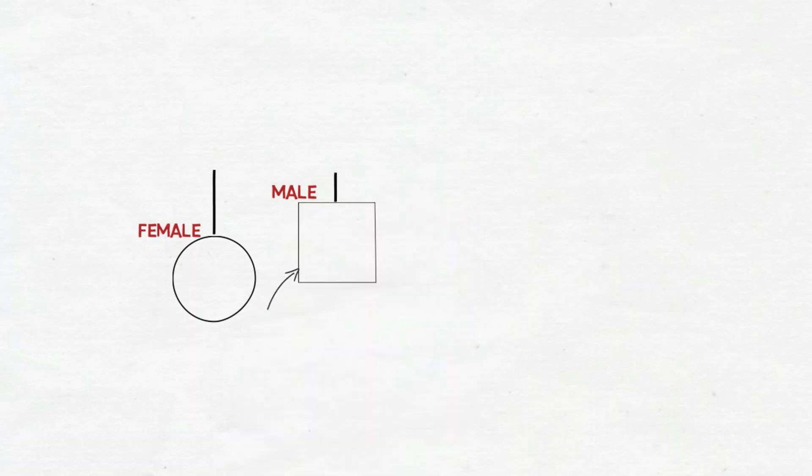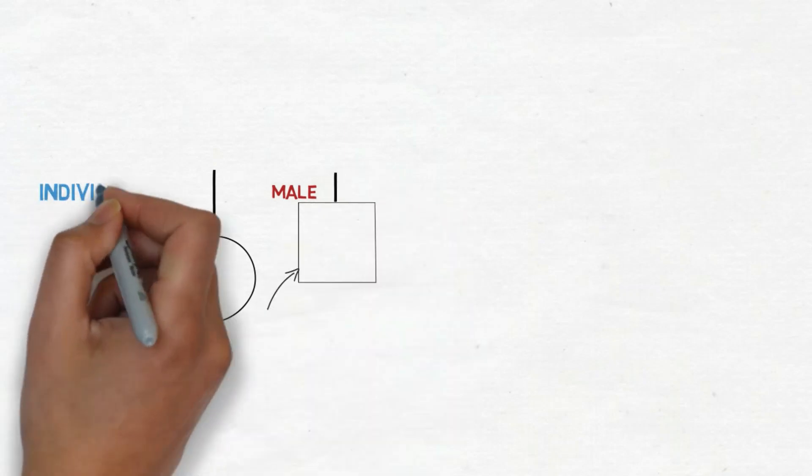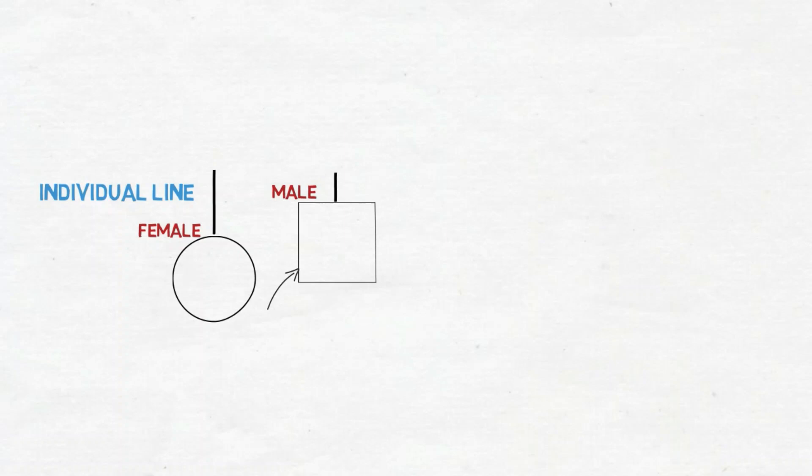So we draw small lines above them called individual lines and connect them via a sibship line and that means that they are siblings.